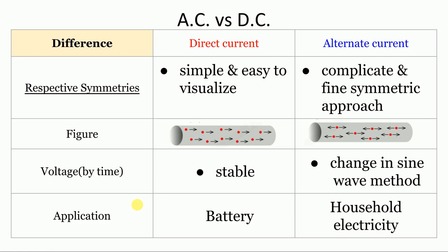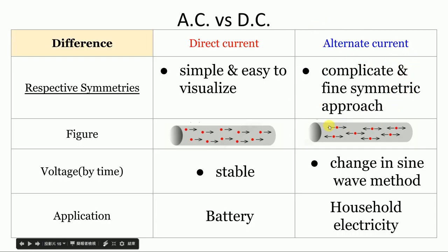I'm Lisi Wang, and next I'm going to talk about the differences between AC and DC. The primary difference between DC and AC is their respective symmetries. DC is simple and easy to visualize as a flow of water through a pipe — it only flows in one direction. On the other hand, AC is more complex but has a splendidly symmetric approach, alternating the voltage in sinusoidal waves that switch back and forth.